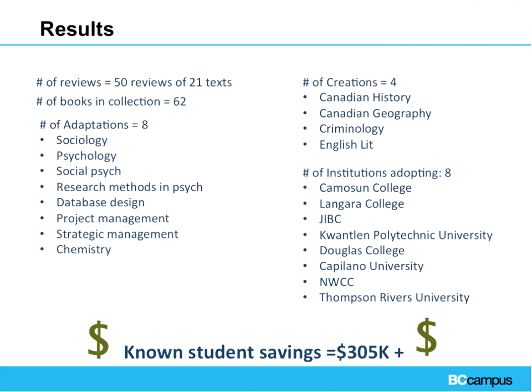Here are our results: we currently have over 30 text reviews and 63 books in our collection — with 10 new texts reviewed just in the last two days. Current adaptations are at eight: sociology, psychology, social psychology, research methods and psychology, database design, project management, strategic management, and chemistry. We are currently working on four creations: Canadian history, criminology, English lit, and Canadian geography, which was fully completed and is now available on the website.